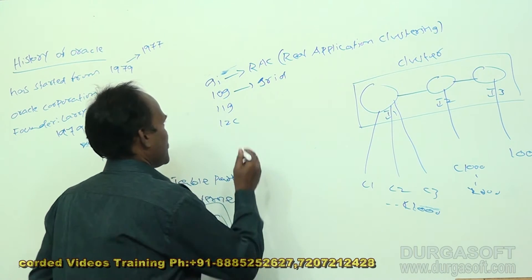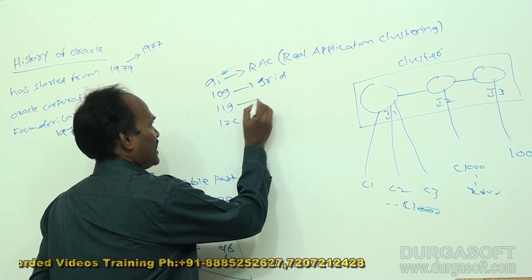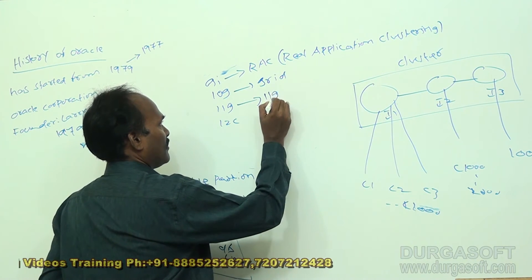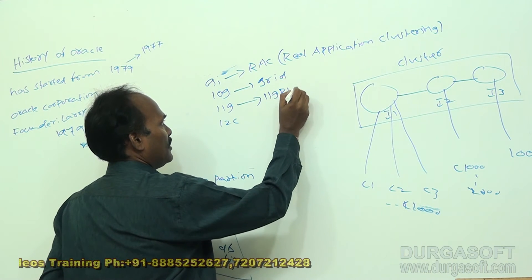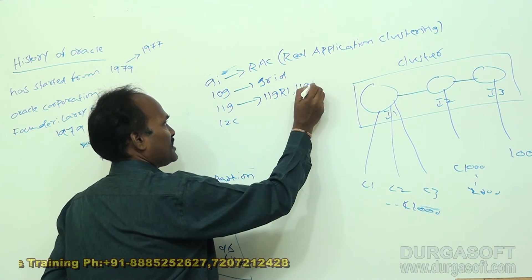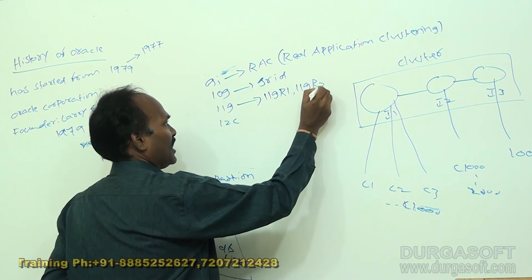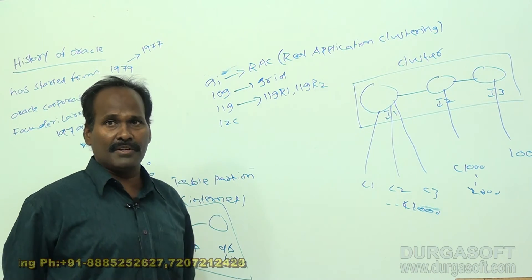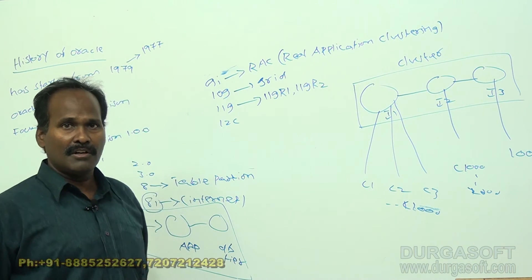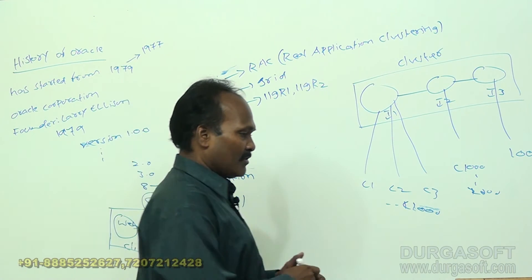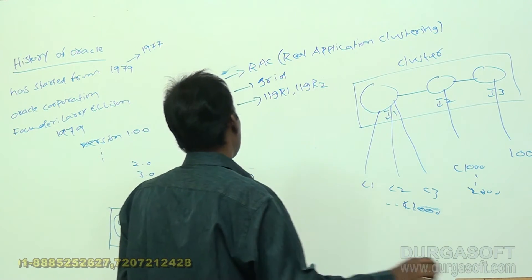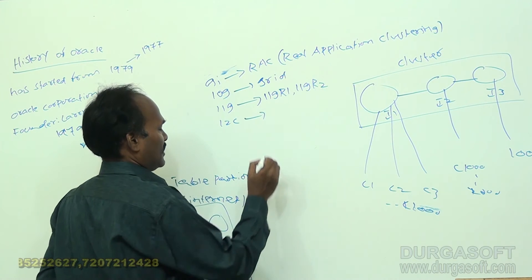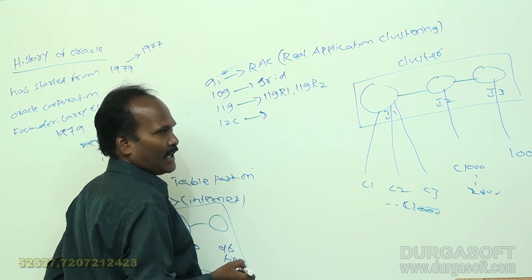Most industries are now using Oracle 11G, which has two versions: 11G R1 and 11G R2. There are many differences between these two versions. When coming to Oracle 12c, it is not that popular in India.